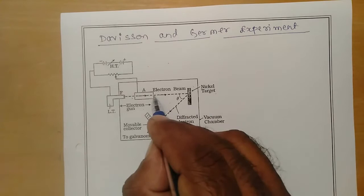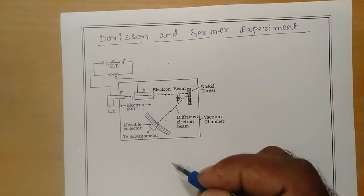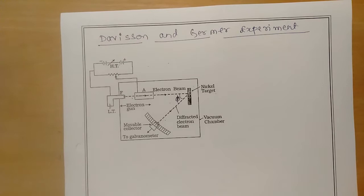The angle between the initial direction of the electron beam and this particular scattered beam is taken as π (pi), which is known as the scattering angle. Our intention is to prove that whenever electrons are accelerated with a certain potential difference, they are associated with waves — and that particular wavelength is given by λ = 12.27 divided by the square root of V, for the electron.